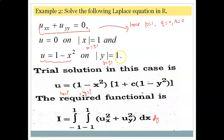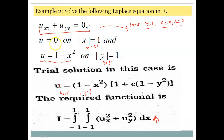Similarly, the next example requires us to solve the Laplace equation. In the Laplace equation the right-hand side is zero, whereas in the Poisson equation the right-hand side is some nonzero function. So for this Laplace equation, p = 1, q = 0, r = 0. The boundary conditions are: u = 0 when |x| = 1 (i.e., x = ±1), and u = 1 − x² when |y| = 1 (i.e., y = ±1).